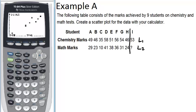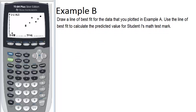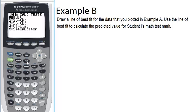Now let's go to example B. Draw a line of best fit for the data that you plotted in example A. Use the line of best fit to calculate the predicted value for student I's math test mark. All right. So to make the line of best fit, you're going to go into stat again, but scroll over to calc and hit four for linear regression. Now you want to make sure we have list one and list two highlighted because those are where our variables are. And they are, so that's good. So we can scroll down to calculate and select enter.